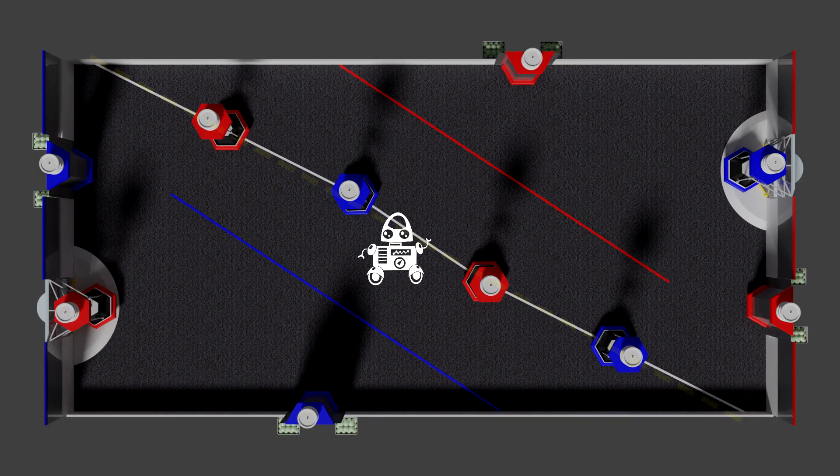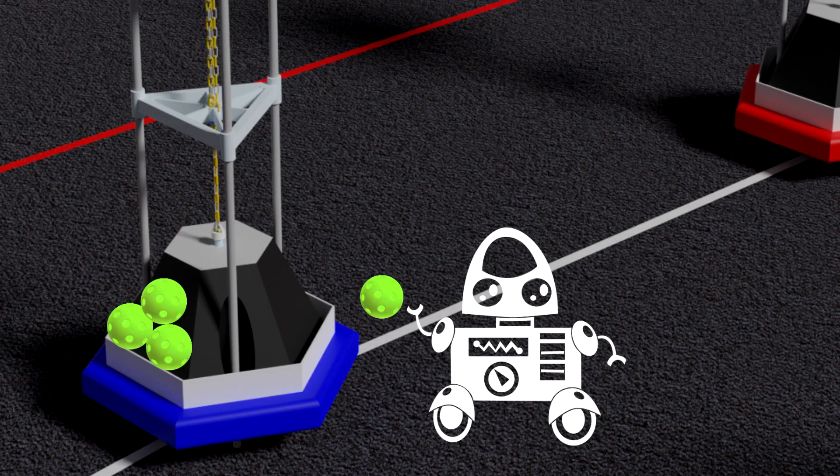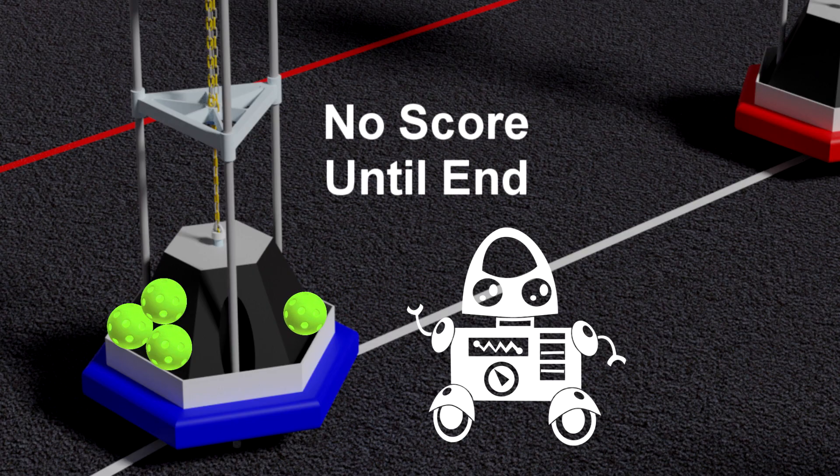For the remaining 135 seconds, drivers control robots and are free to go anywhere on the field. Drain scores count immediately. However, frustum pinballs are only scored at the end of the match.